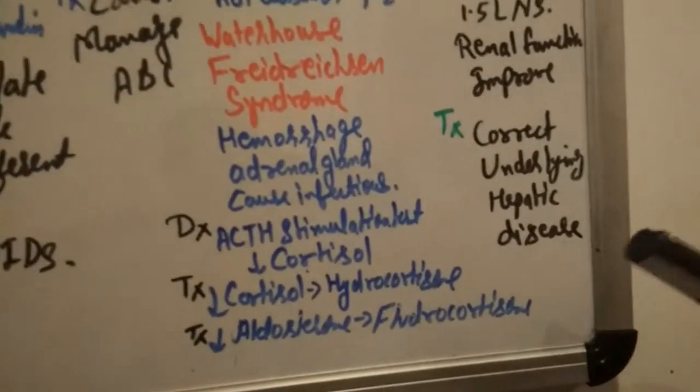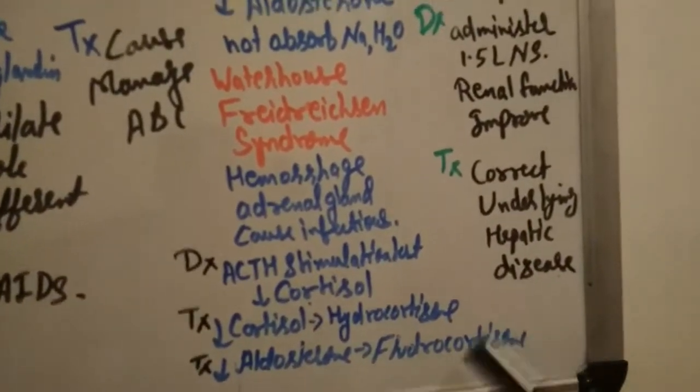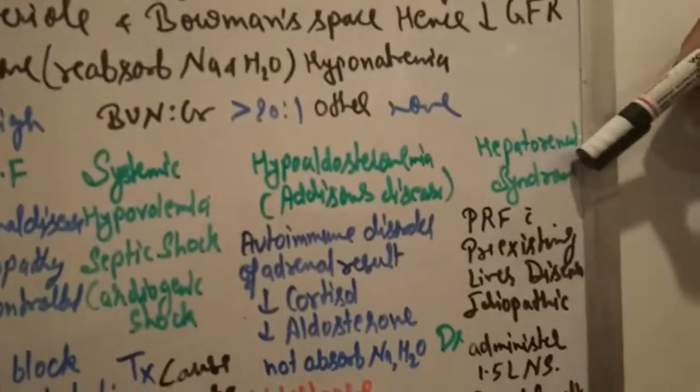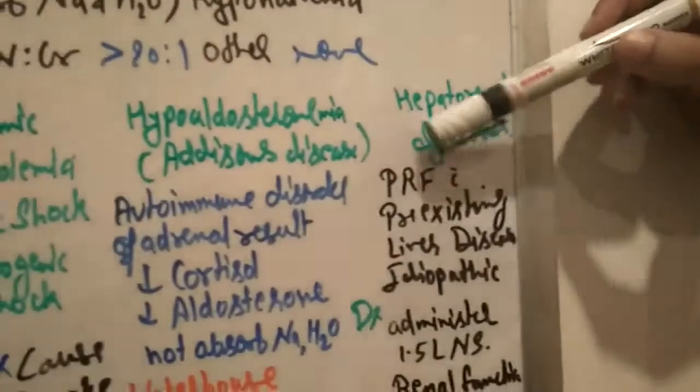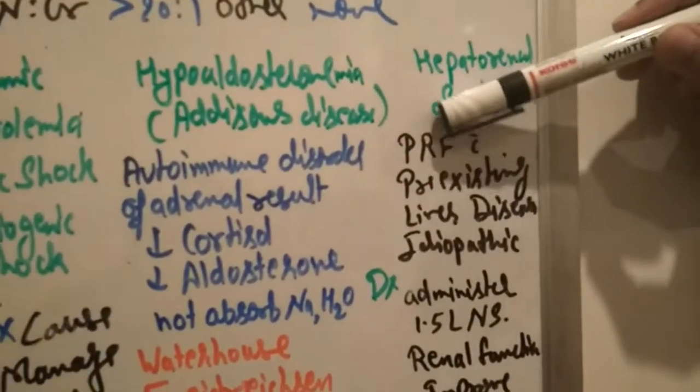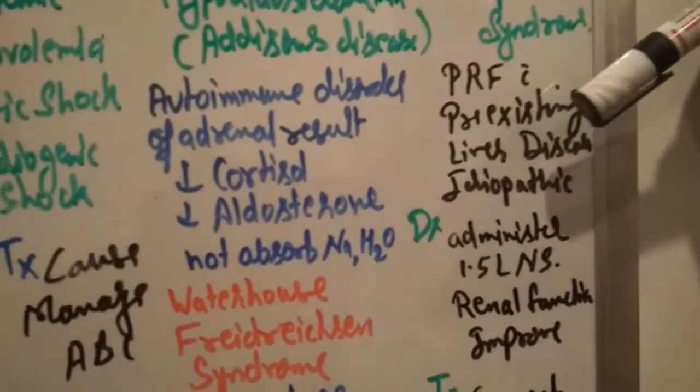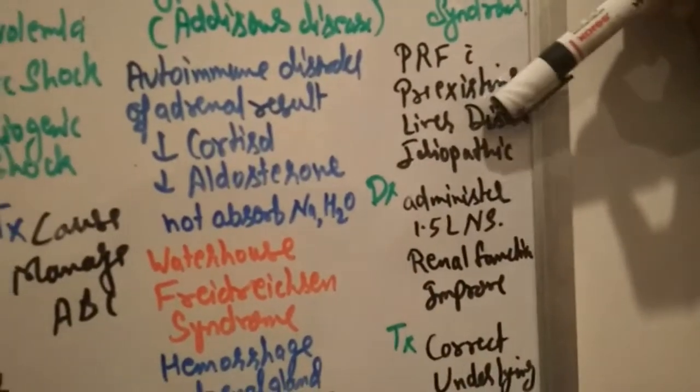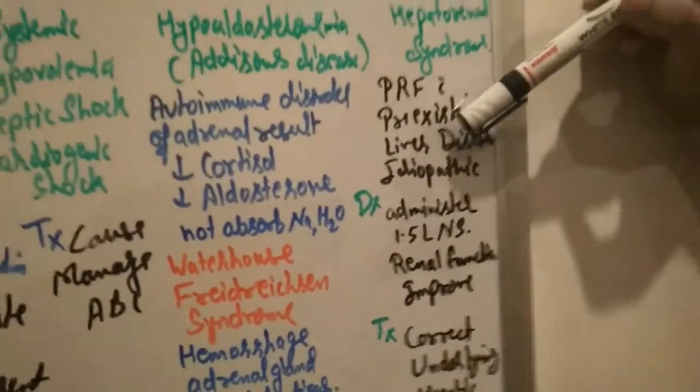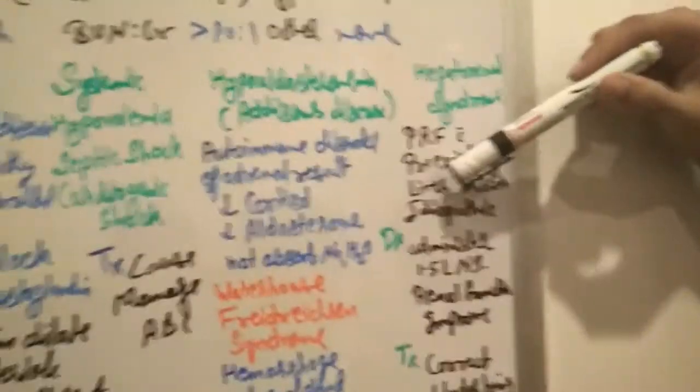And if there is decreased aldosterone, a mineralocorticoid, we need to replace with fludrocortisone 6 mg TDS. Then hepatorenal syndrome. How does it cause pre-renal failure? It's an idiopathic situation: pre-renal failure with pre-existing liver disease like hepatitis, maybe cirrhosis of liver, maybe cancer of liver, maybe chronic or acute liver disease.